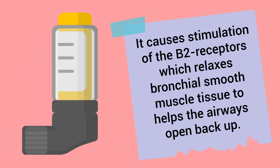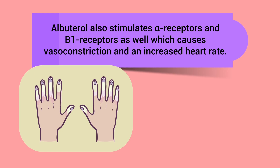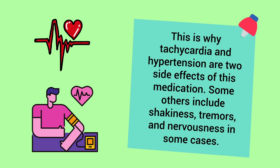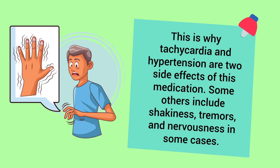Albuterol causes stimulation of the beta-2 receptors, which relaxes bronchial smooth muscle tissues to help the airways open back up. It also stimulates alpha receptors and beta-1 receptors as well, which causes vasoconstriction and an increased heart rate. This is why tachycardia and hypertension are two side effects of this medication.